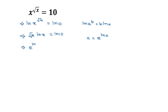...ln of square root of x. So this will be e to the power of ln of square root of x, and this times ln of x is equal to ln of 10 on the right side. Rearranging the left side,